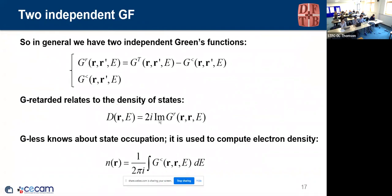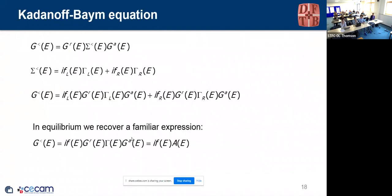The second object is called G lesser. The electron density is the integral of G lesser. In equilibrium, G lesser is simply f(E) times the imaginary part of G retarded. Out of equilibrium the two objects are truly independent — you cannot simply take the spectrum and fill it with one Fermi function. There is a famous kinetic equation (the Keldysh equation) that in steady state tells you what G lesser is.